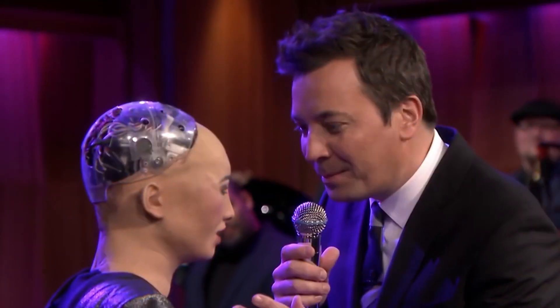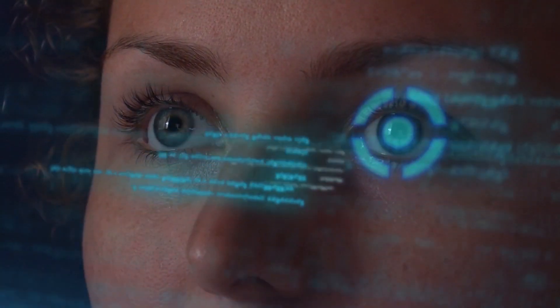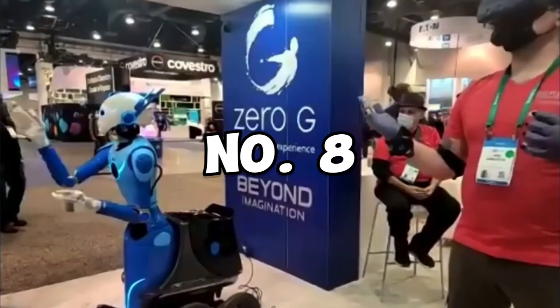In addition to the immensely well-known Sophia, there are 7 more humanoid robots that are quite comparable to her. You will find this information to be quite fascinating. Number 8.